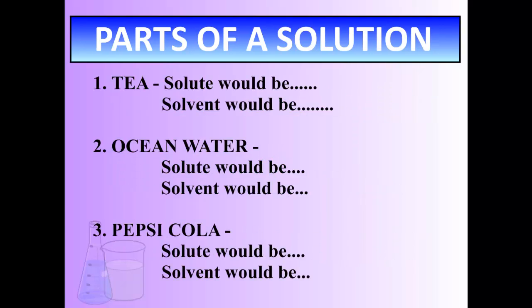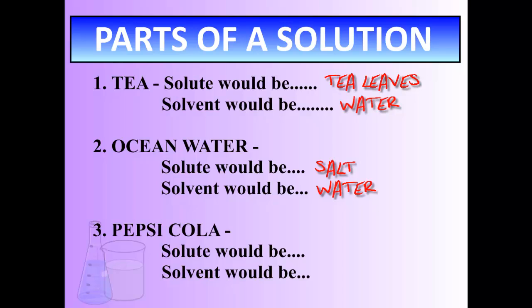Some examples of solute and solvent. In tea, the solute would be tea leaves, solvent water. Ocean water, solute would be salt, solvent would be water. Pepsi, cola, coke, Mountain Dew, whatever you'd like. Solute would be? There's a bunch in there. There's carbon dioxide, there's sugars, there's flavoring, there's coloring. So pick one. Solvent would be water. So you get an idea of what solute and solvent are.